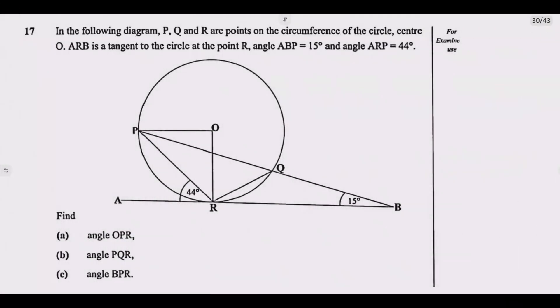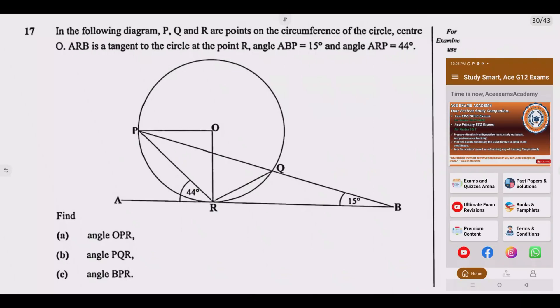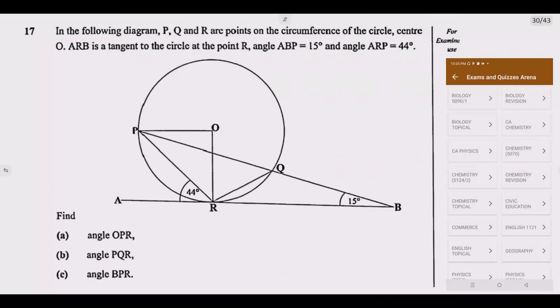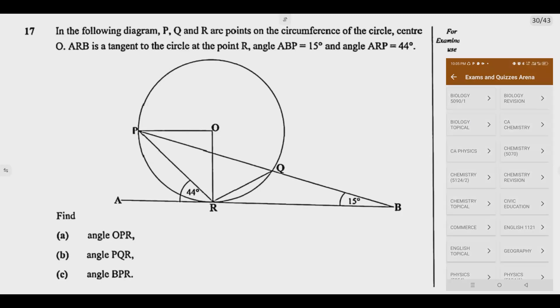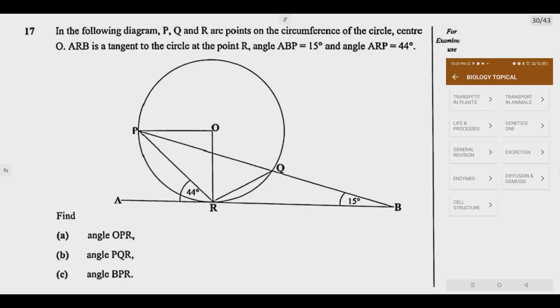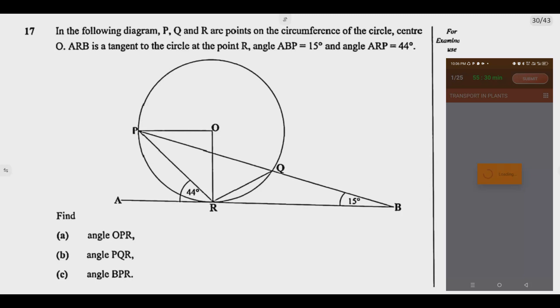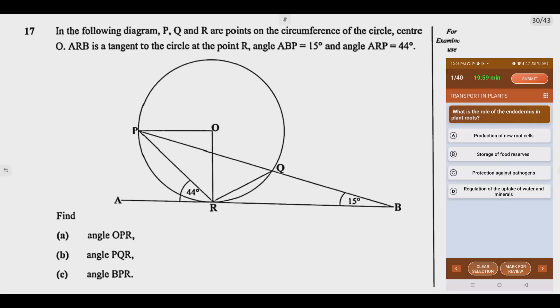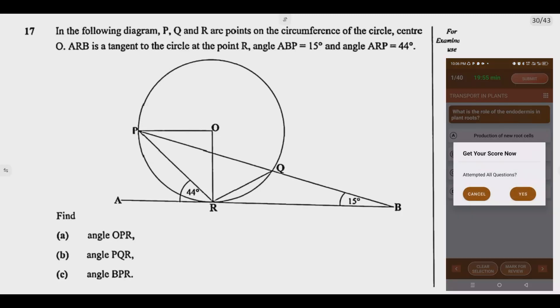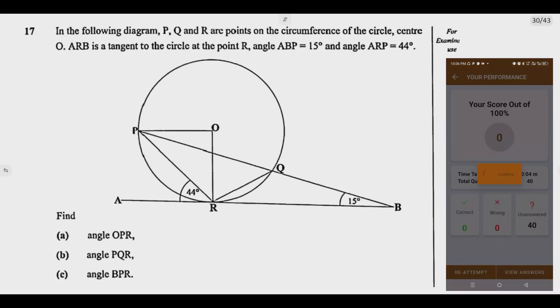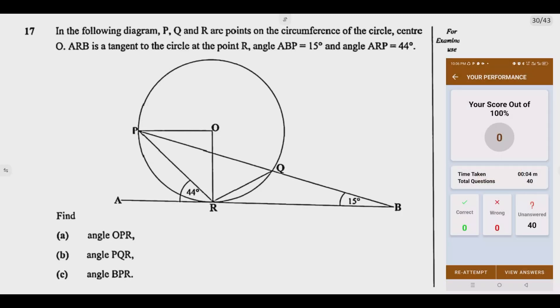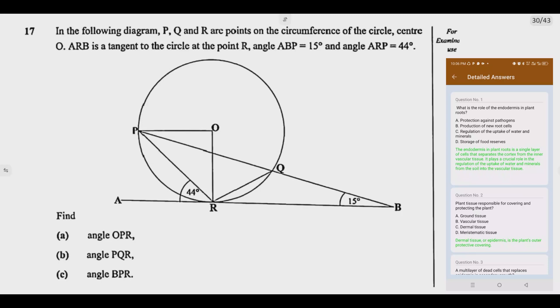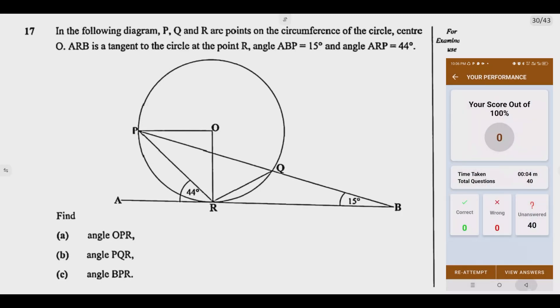Let us look at question 17. In the following diagram, P, Q and R are points on the circumference of the circle center O. A, R, B is a tangent to the circle at the point R. Angle ABP equals 15 degrees and angle RPQ equals 44 degrees.